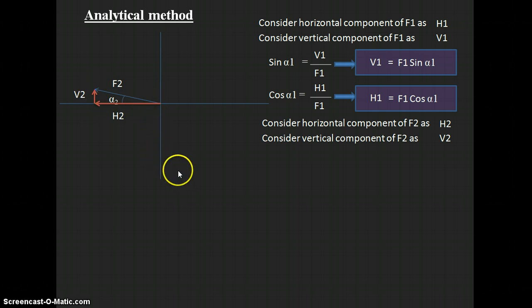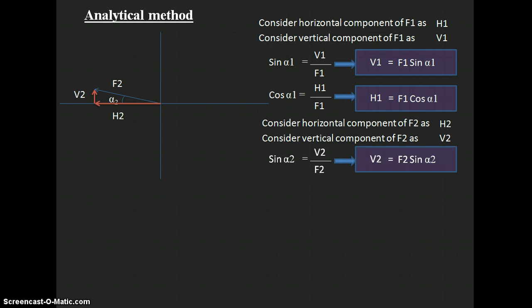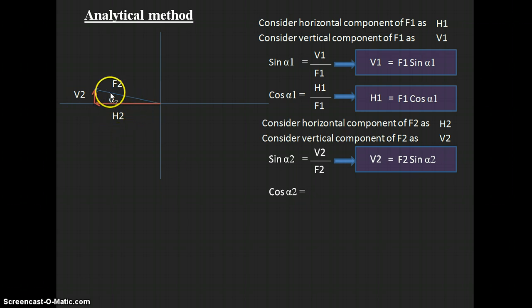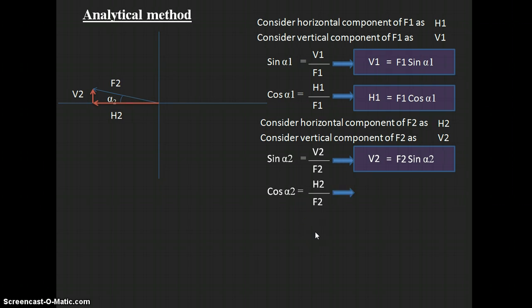Applying sin(α₂) = V2/F2, so V2 = F2·sin(α₂), giving us the vertical component of F2. Then applying cos(α₂) = H2/F2, so H2 = F2·cos(α₂), giving us the horizontal component of F2.